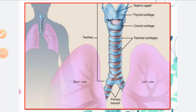Hello students. In the respiratory system, we are proceeding with another structure, that is the trachea. Here is the diagram of the trachea. You can see that after the larynx, the structure that continues is the trachea. In the trachea, we can see that hyaline cartilage rings are present. So let's study about the trachea.